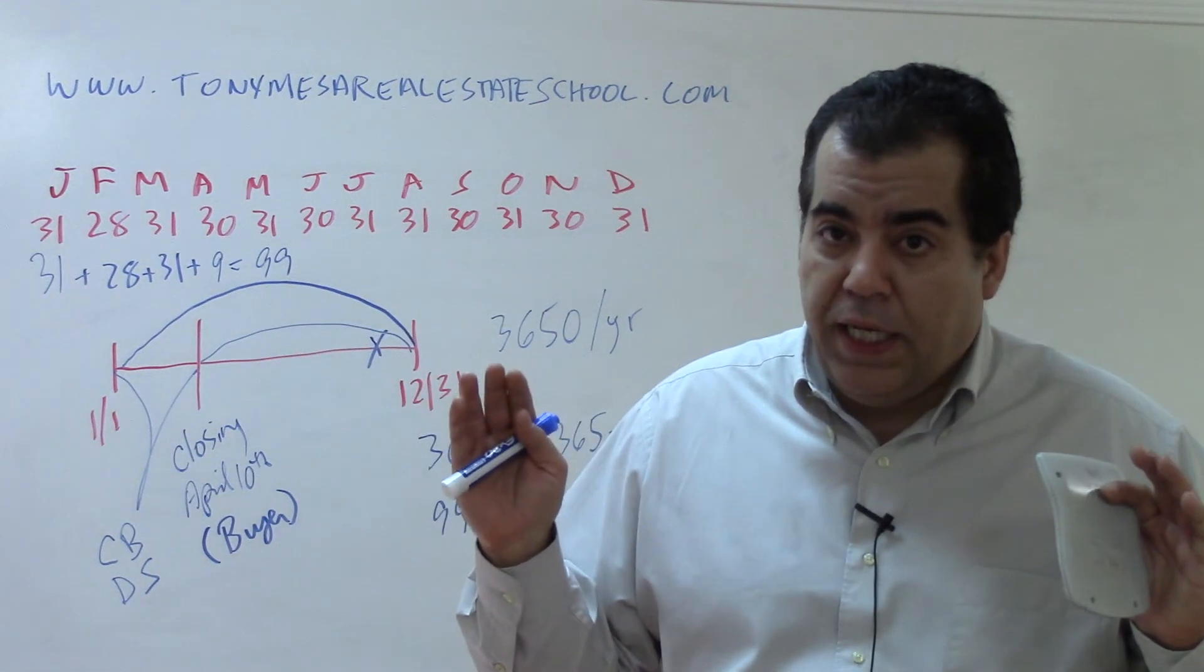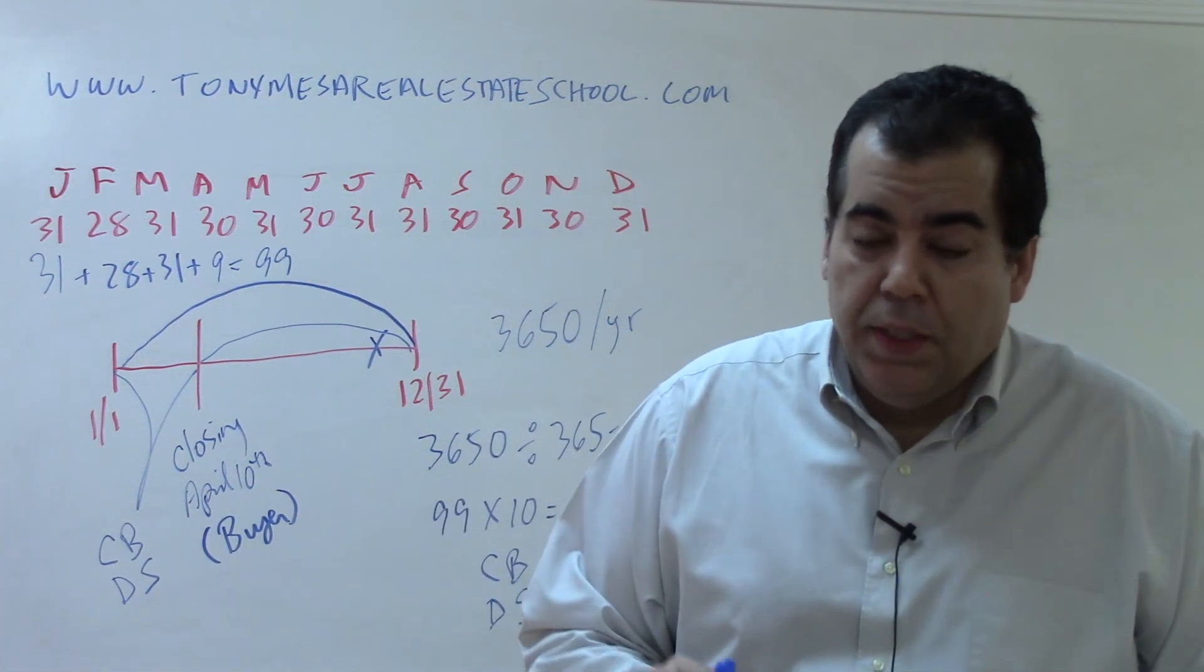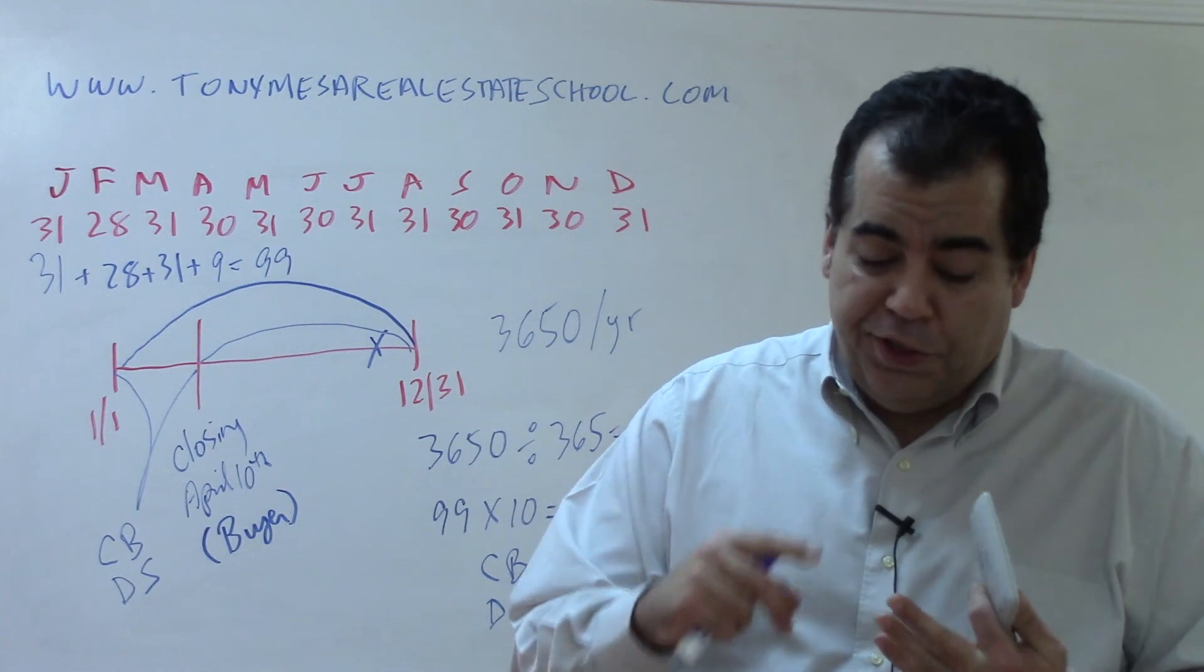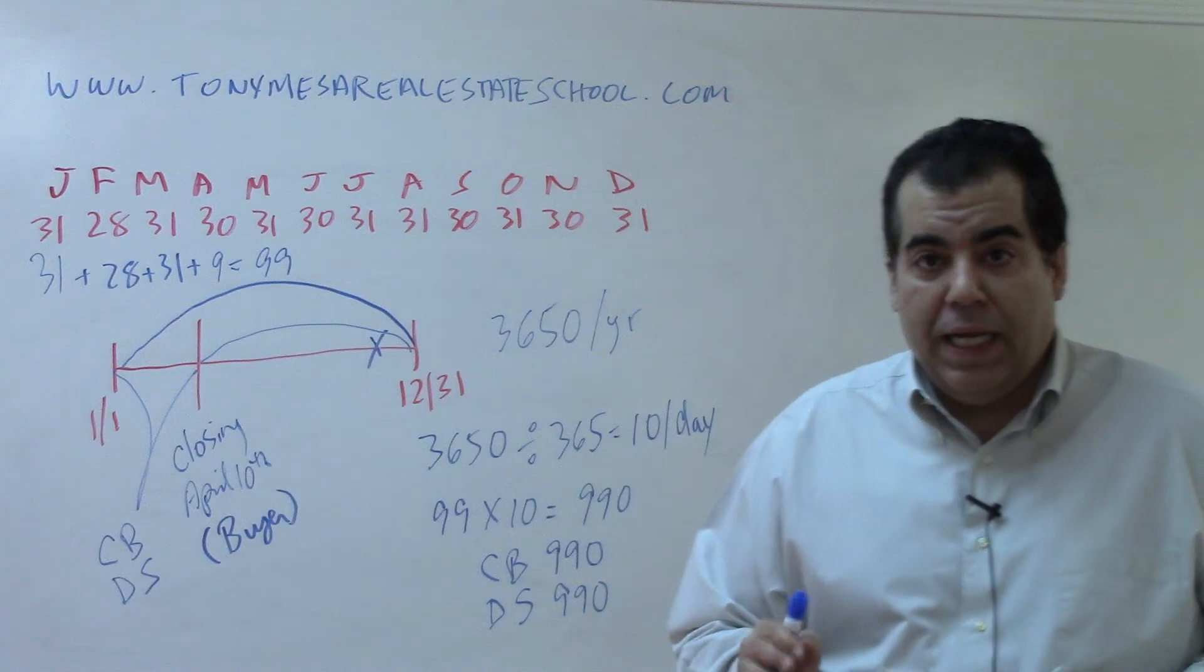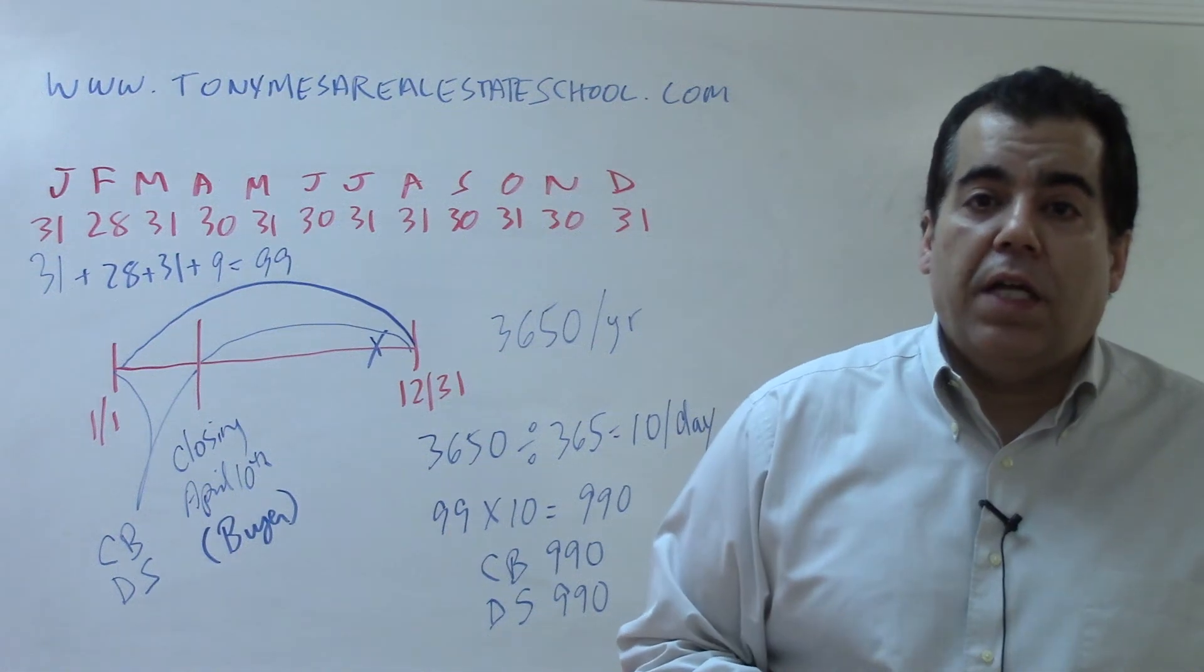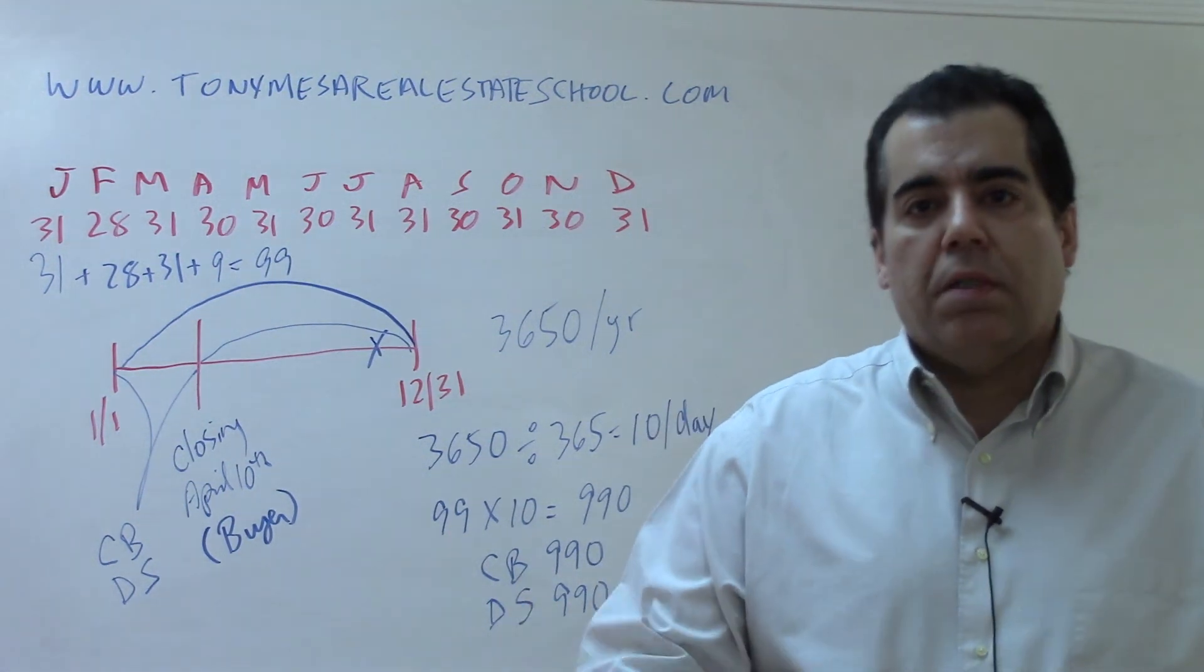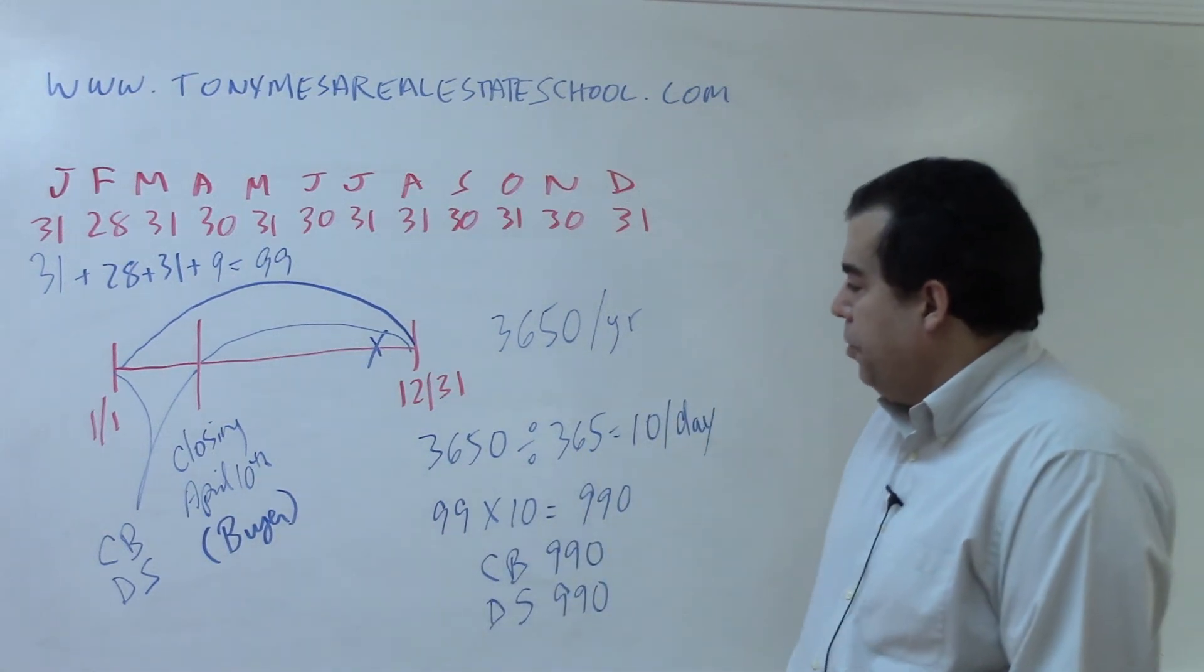So you see, I'm taking the state exam and I've got a proration problem. I don't care if it's a property tax proration, a rent proration, or assumed interest proration. I'm taking the state exam and there's a proration problem, and it's credit the buyer $1,000 and debit the seller $500. That has to be wrong. Why? Because it's always the same number that one side is credited and the other side is debited when it's a proration problem.